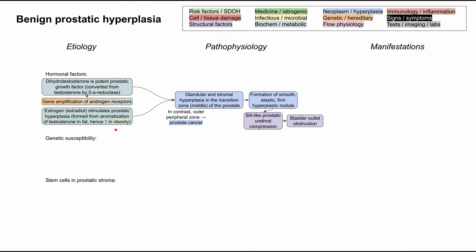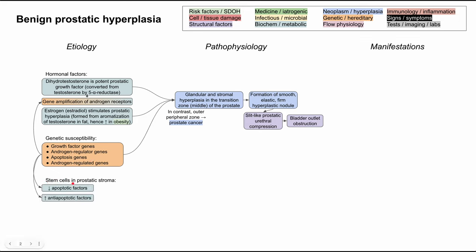People with obesity are therefore predisposed to benign prostatic hyperplasia. Regarding genetic susceptibility, there are many genes that can predispose you to BPH, including genes for growth factors, androgen regulators, apoptosis, and androgen receptors. If you have increased amplification of androgen receptors, you'll have more effect from testosterone and dihydrotestosterone. If apoptosis genes are upregulated or downregulated, you can either decrease apoptotic factors or increase anti-apoptotic factors in stem cells, leading to longer stem cell lifespans and more growth in the transition zone.